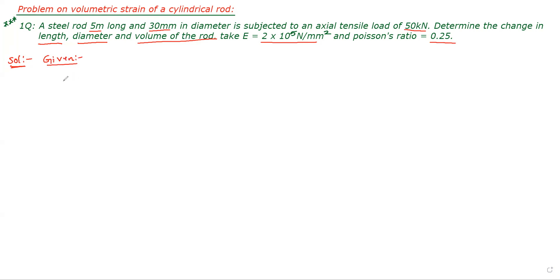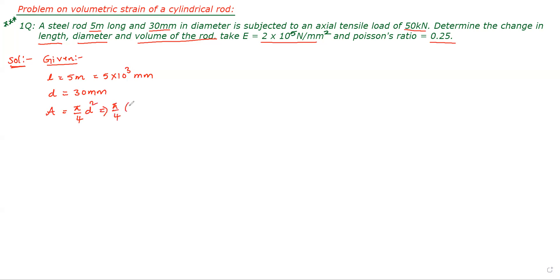The given rod is a steel rod. Length L = 5 meters, converted to 5×10³ mm. Diameter D = 30 mm — no need to convert. Since it is a cylindrical rod, cross-sectional area = π/4 × D² = π/4 × 30² = 706.86 mm².